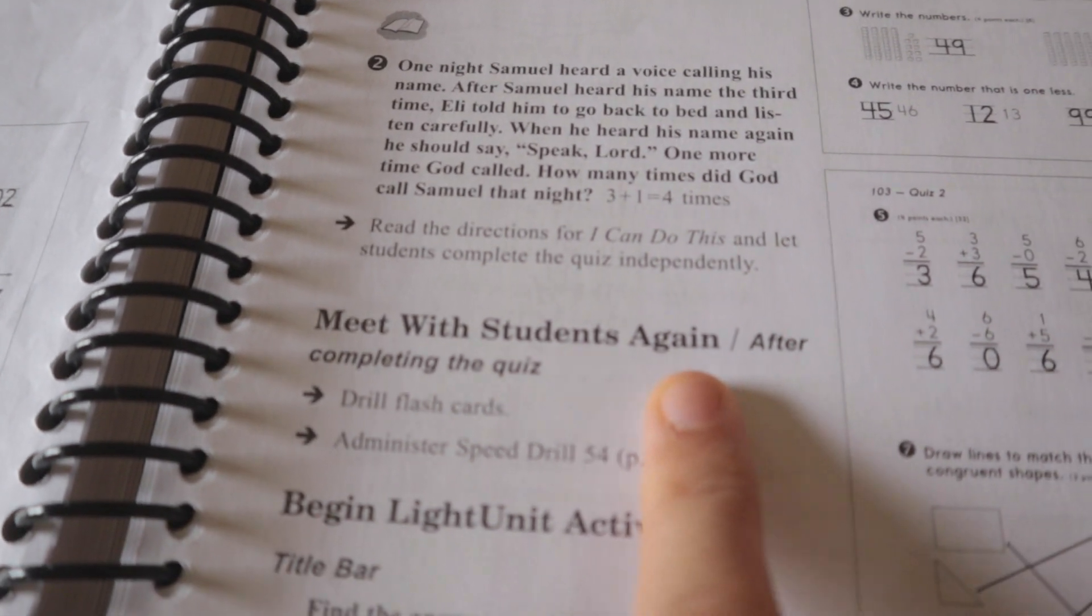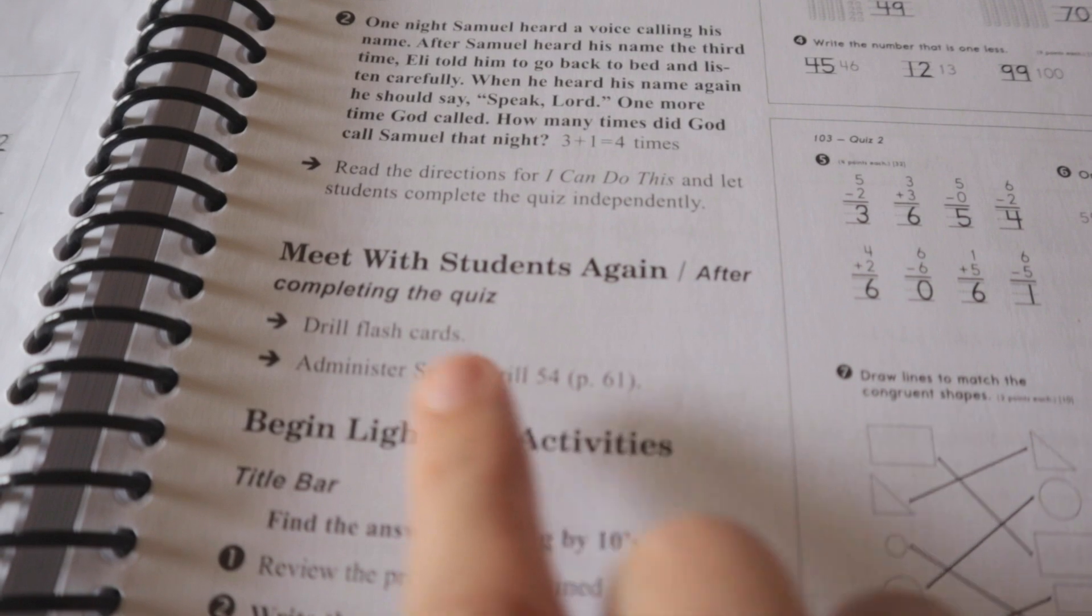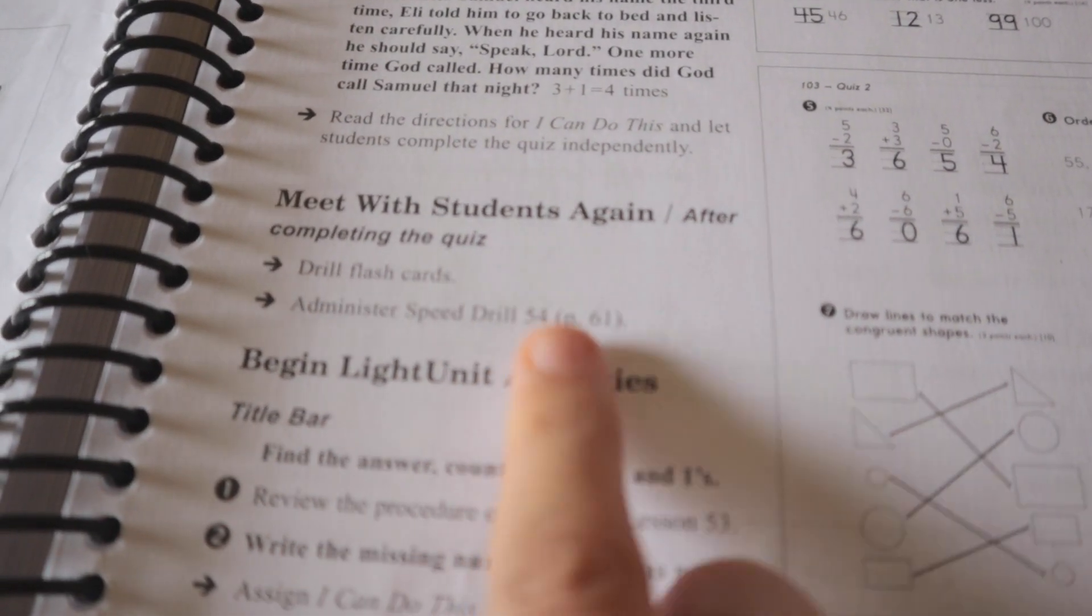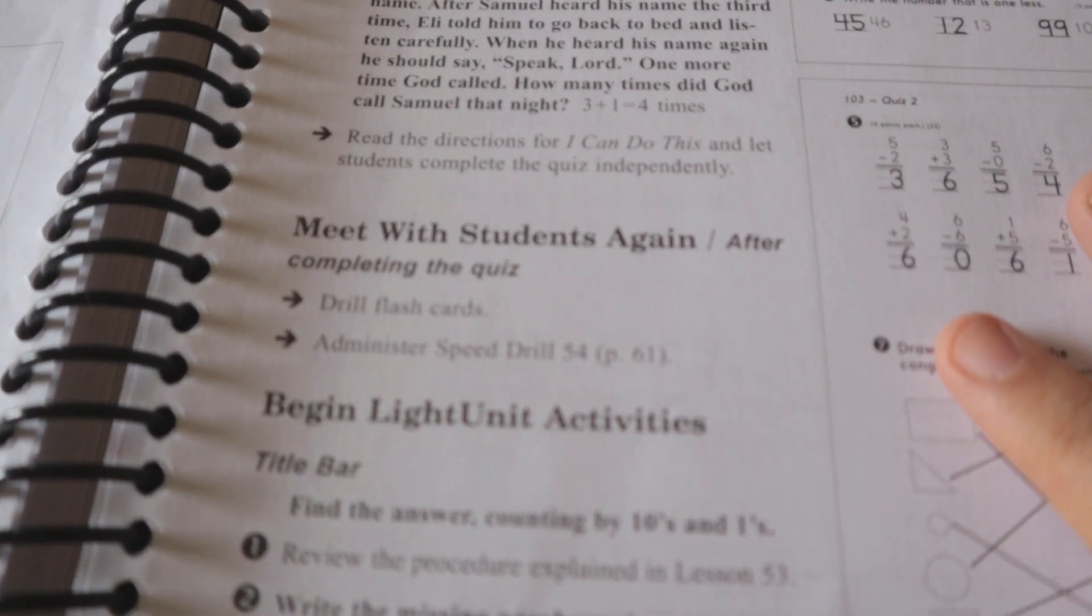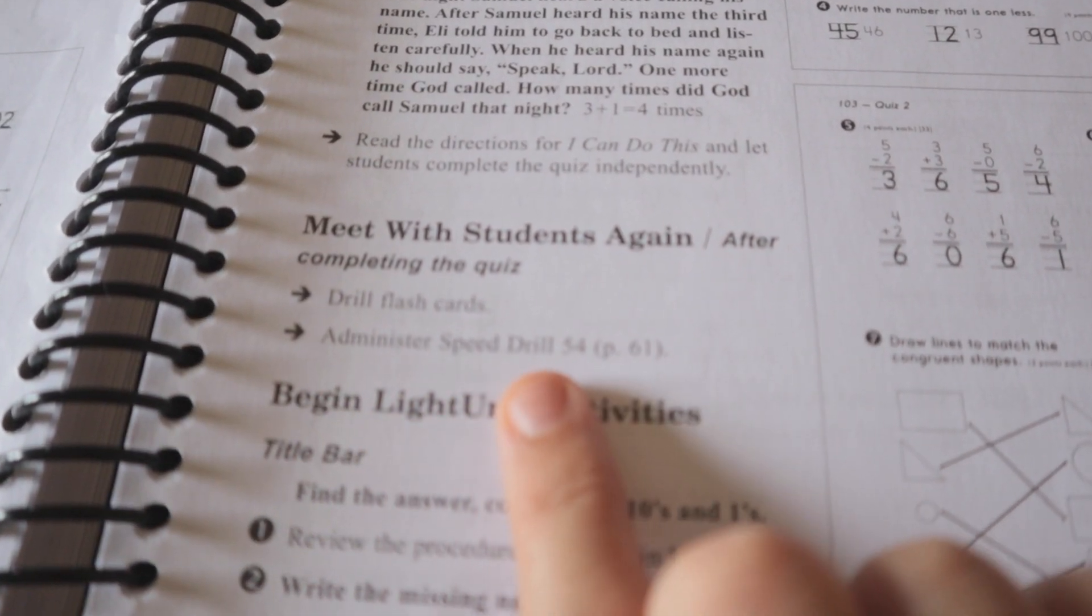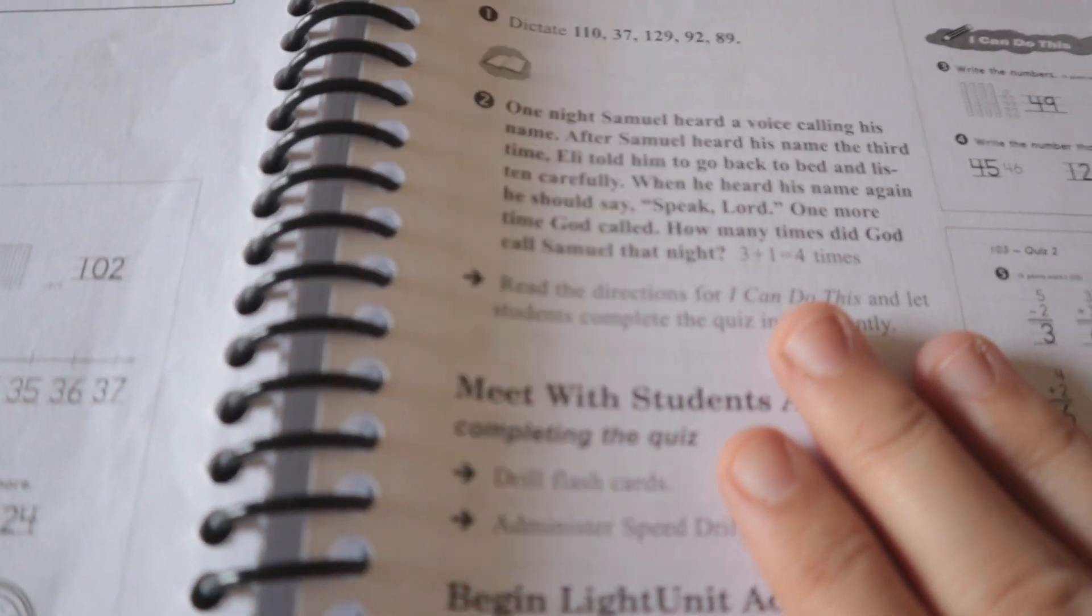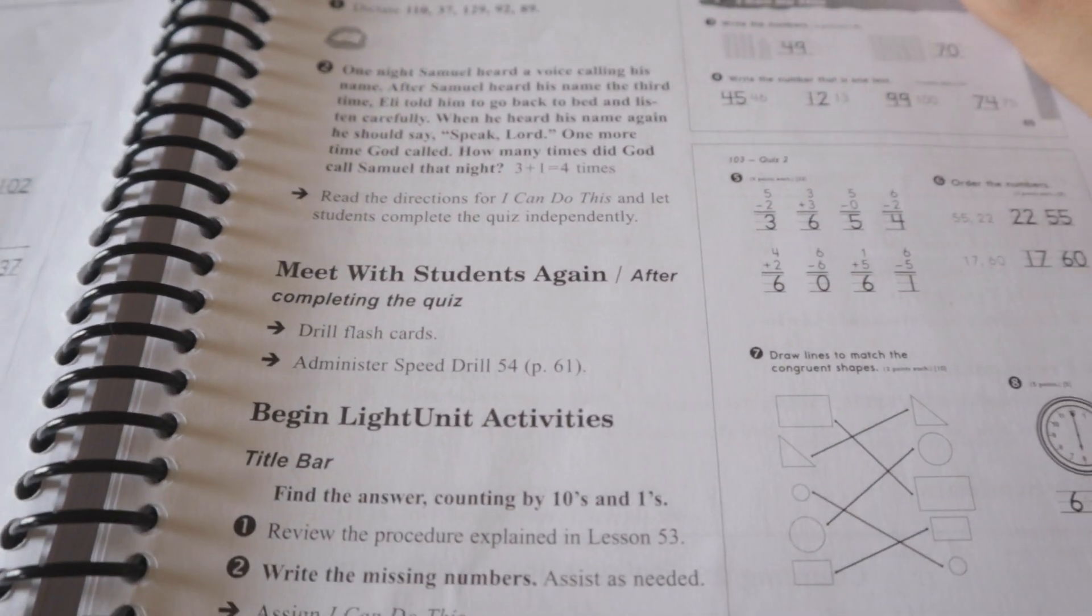And then there are also like the little word problems and things like that. Then when you meet with the student again after completing the quiz you drill flashcards if you find that necessary and then you administer the speed drill and all that means is that you see how many they can get correct in one minute. Typically my kids will finish them but as it gets to the upper levels it does get a little bit harder.